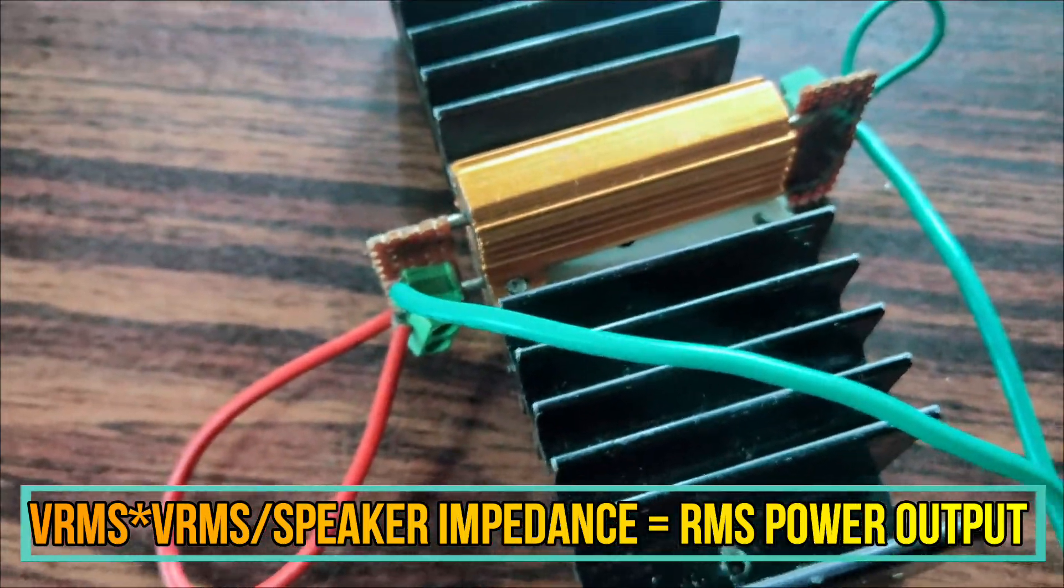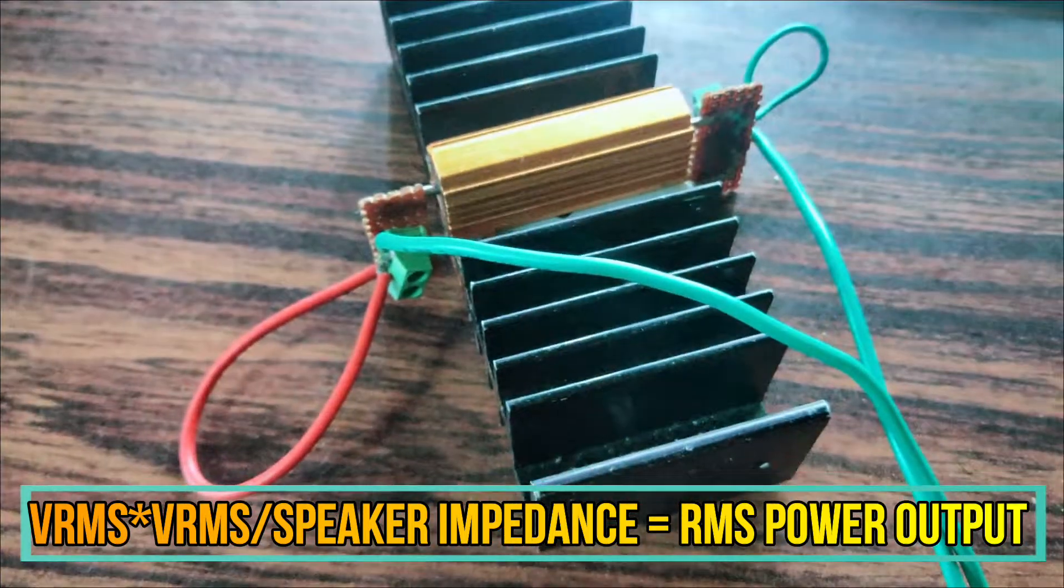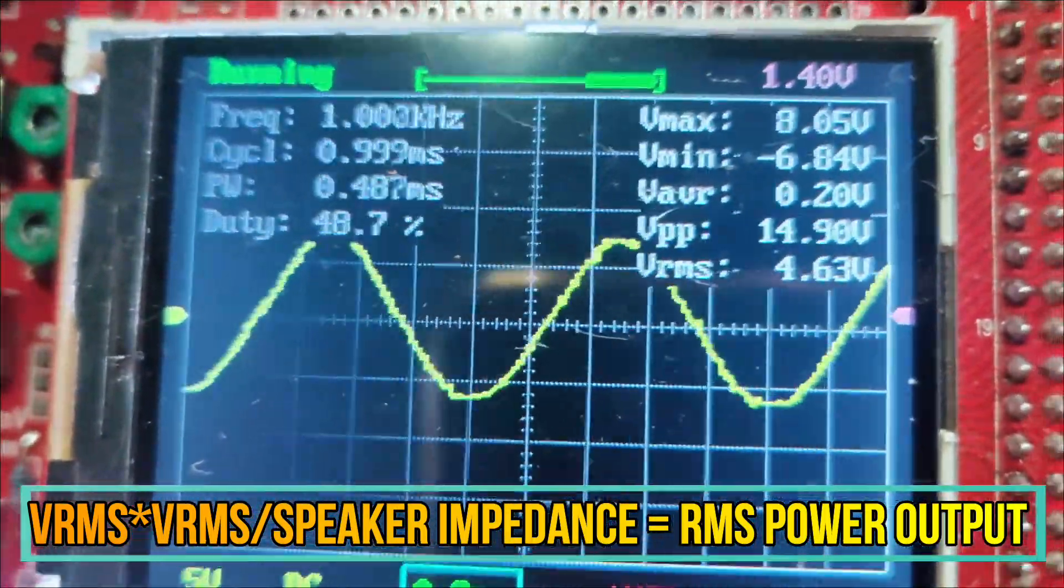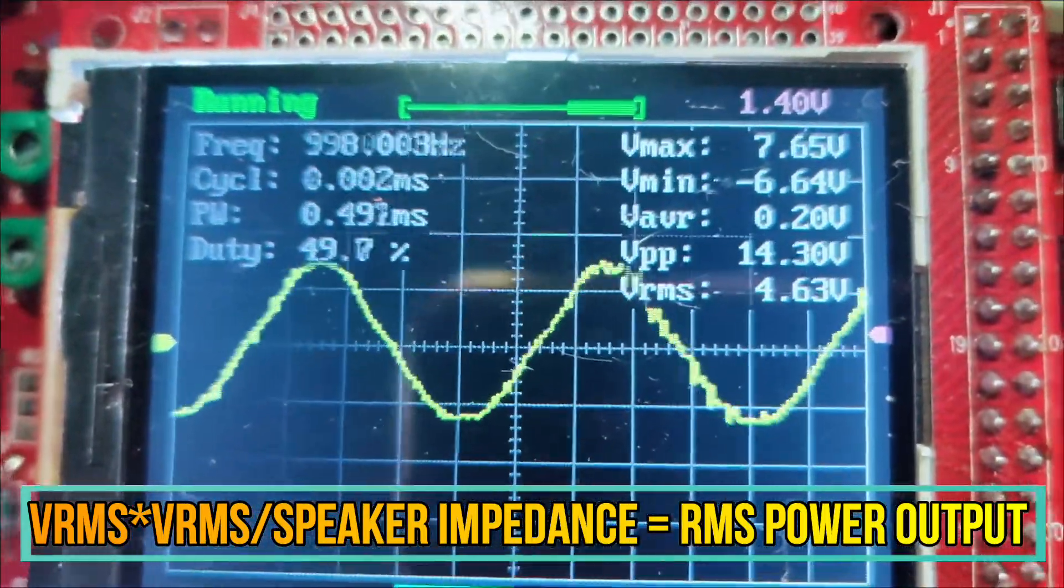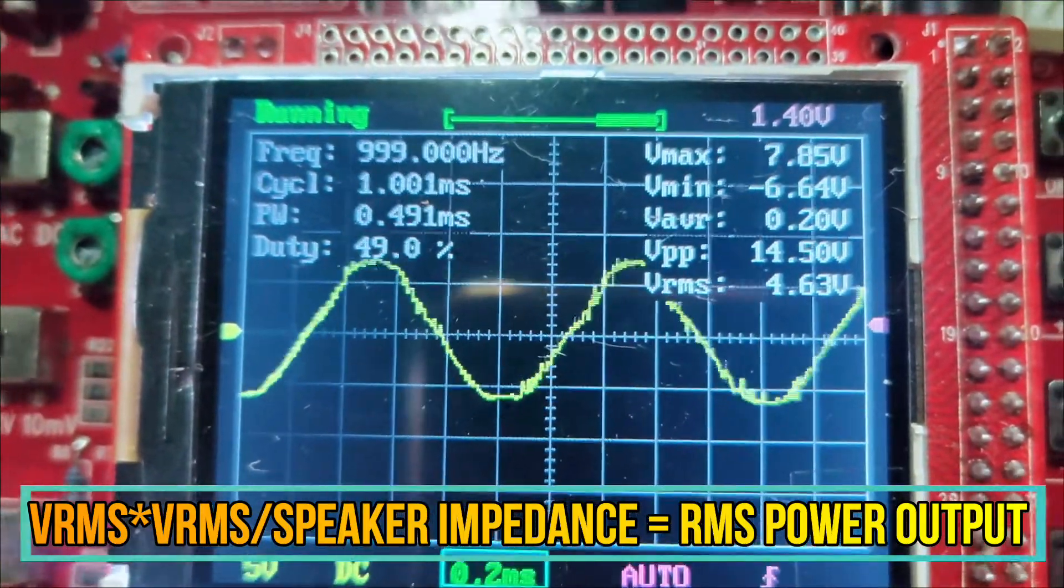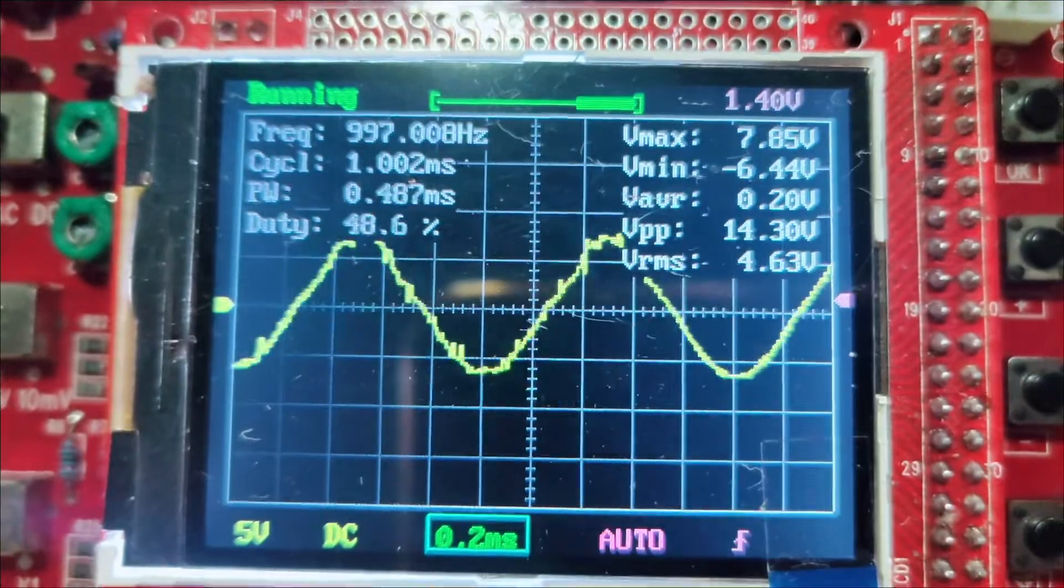So you can expect 1.5 to 2.5 watts using a 12 volt power supply. There are many ways of making a virtual ground. I will explain one of them in the next video. Stay tuned and thank you.